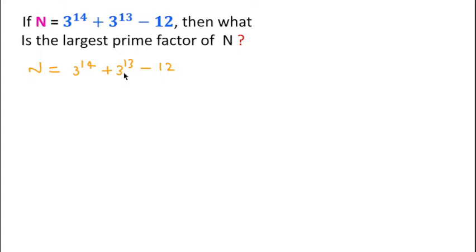After that, I will take 3 to the power 13 common from these two terms. Then we can write 3 to the power 13 times, if we take common, then here 3 and here will be 1 minus 12. And we can write this 3 plus 1 as 4 and minus 12.